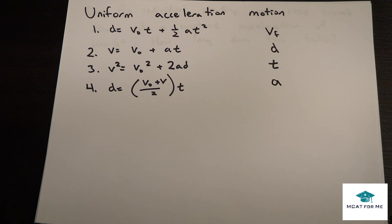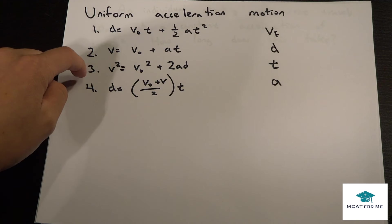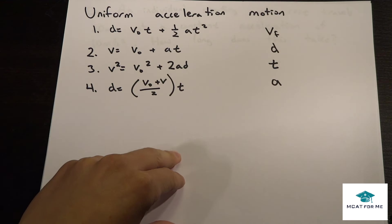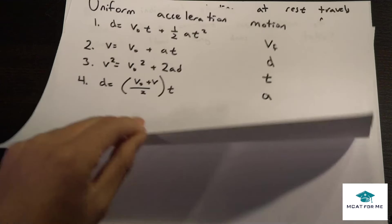So, for example, if they give us everything except the time, we know that we use equation three. If they give us everything except acceleration, we use equation four. So these equations will be very, very useful for us.